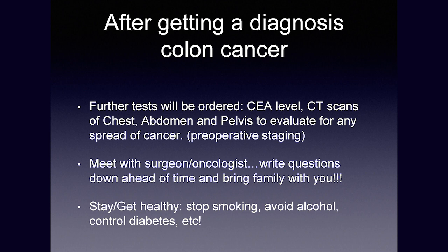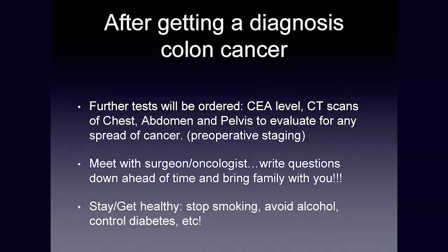CT scans of the chest, abdomen, and pelvis will be done to see whether the cancer has spread to any other organs before heading to surgery. Surgery is most commonly utilized for colon cancers. Even for some stage-four cancers, recent literature indicates taking out the primary source within the colon — even if it's already spread to the liver — can be beneficial. Typically you'll meet with the surgeon who will plan on taking out that portion of the colon, and an oncologist who will help with chemotherapy that may or may not be necessary after surgery.